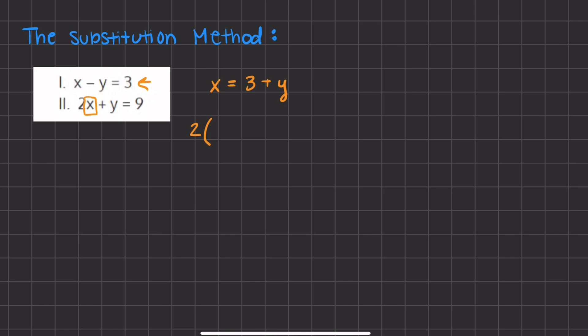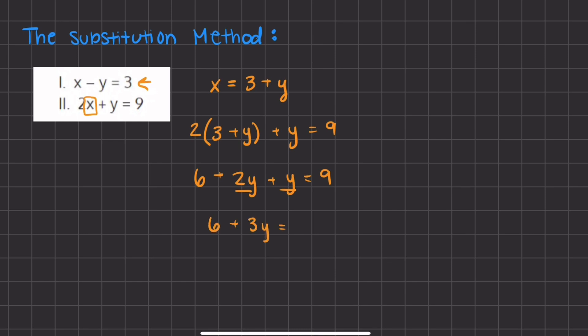So we have 2 times our x, which is going to be 3 plus y, plus y equals 9. Now we have a linear expression with only one variable, meaning we can solve for y by isolating it. We distribute the 2 into the parentheses: 2 times 3 is 6, plus 2 times y is 2y, plus y equals 9. Now we combine our like terms, 2y and y, giving us 6 plus 3y equals 9.